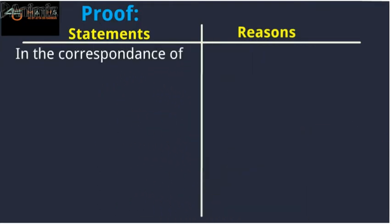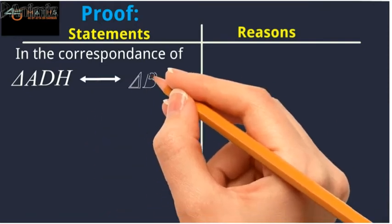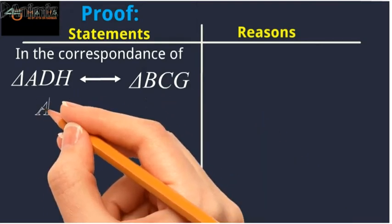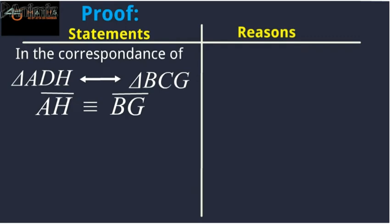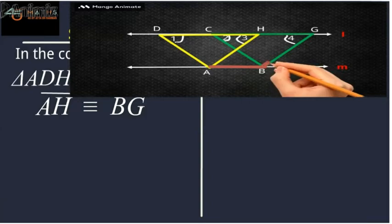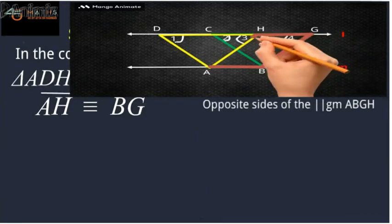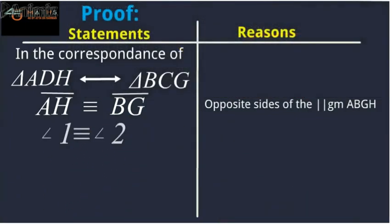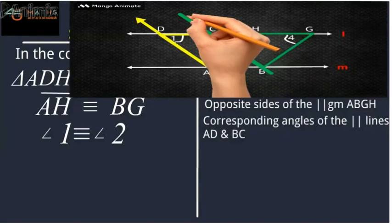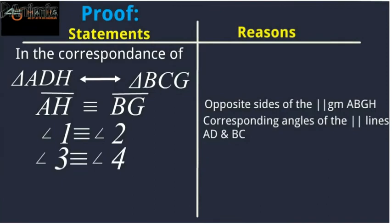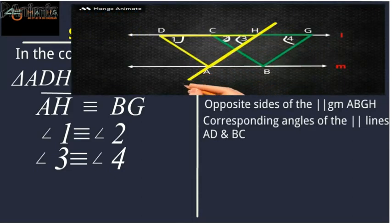In the proof, if we compare triangle ADH with triangle BCG, we see that side AH is congruent to side BG. The reason is that they are opposite sides of parallelogram ABGH. Also, angle 1 is congruent to angle 2 because they are corresponding angles of the parallel lines AD and BC when extended. Similarly, angle 3 is congruent to angle 4, as they are corresponding angles of lines AH and BG when extended.